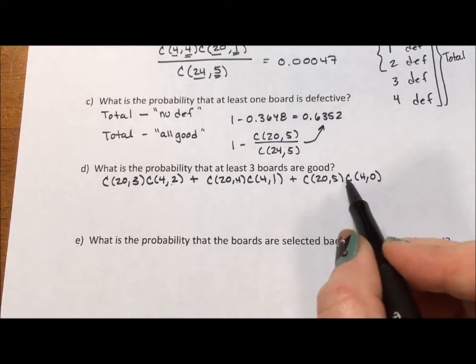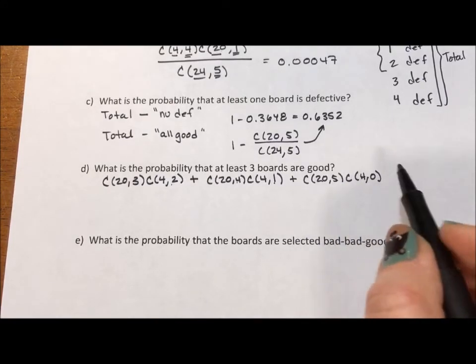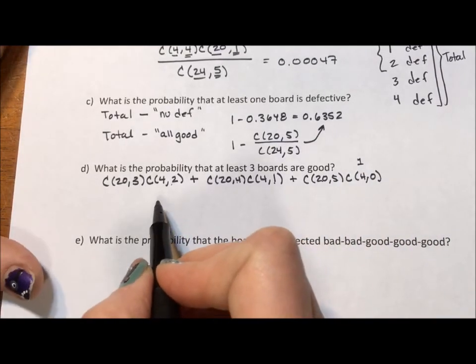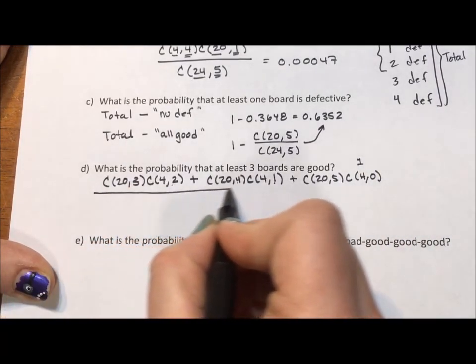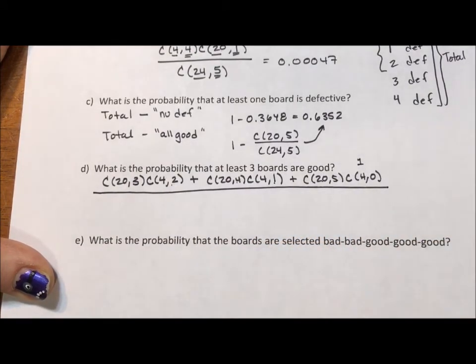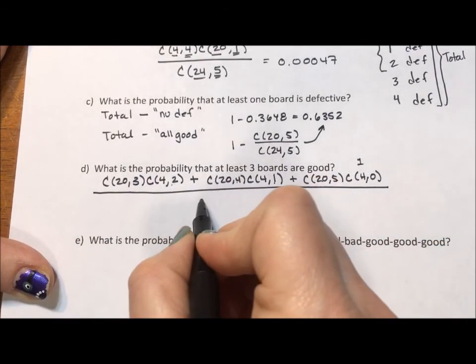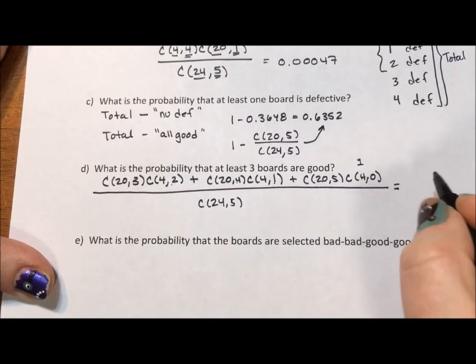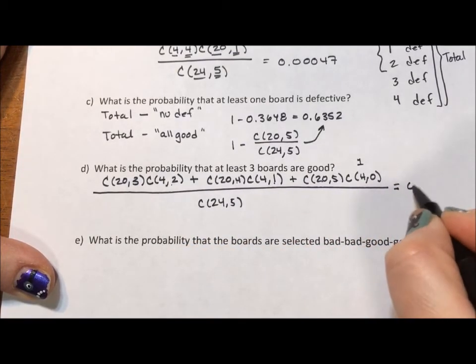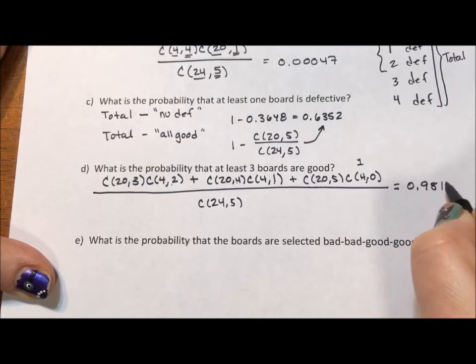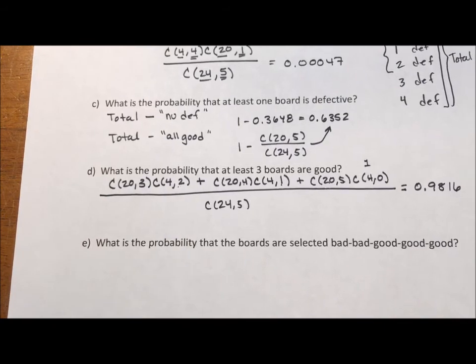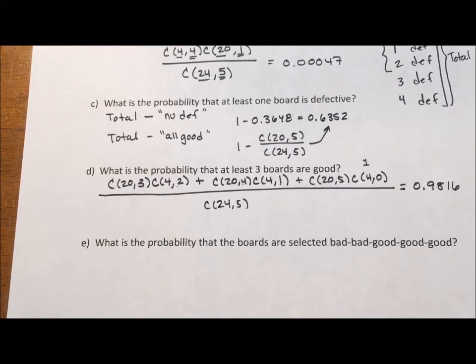Then I would have had 24 for my first number and 5 for my second number. You don't need to do this because the combination of 4 taken 0 at a time is equal to 1, which is why we don't need to bring that into our problem. But it's kind of nice to see the symmetry. We're still going to divide by the total, all 24 taken 5 at a time. And when we calculate this out, we get 0.9816. So it's pretty probable. It is a good, better than good chance that you are going to be getting at least three good boards.